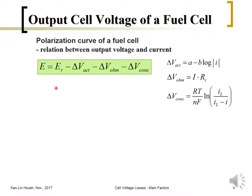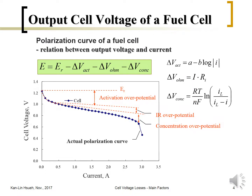If you plot the cell voltage against the current, it gives a characteristic polarization curve. In the lower current density region, most of the loss is due to activation overpotential. At higher current density, especially close to the limiting current, concentration overpotential dominates. The internal resistance also occupies a certain section of the curve.